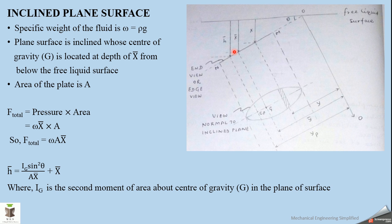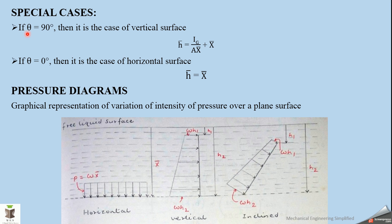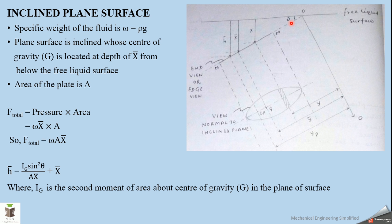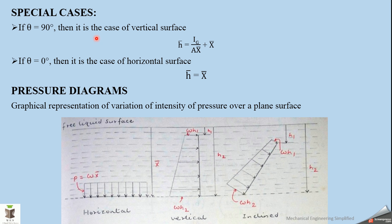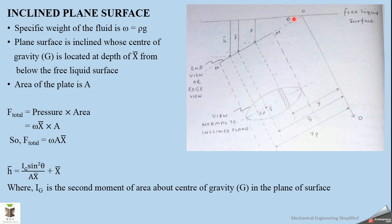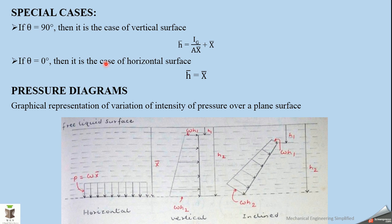You can look at a standard textbook for the derivation of this expression — it is a simple two-to-three line derivation. From the inclined case, we can derive both horizontal and vertical cases by changing θ. When θ = 90°, it becomes a vertical surface, and h̄ = I_G/(Ax̄) + x̄, since sin²90° = 1. When θ = 0°, it is a horizontal surface and h̄ = x̄.